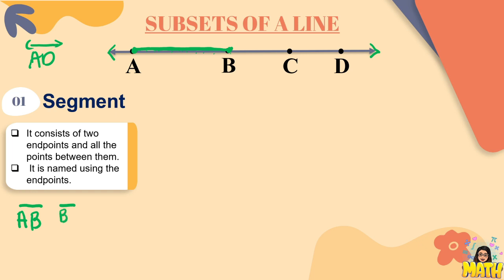Another example, we can have segment BC, segment BD, or even segment AD. Ang symbol sa ating segment is simply a simple line above two letters pero wala na siyang arrow.